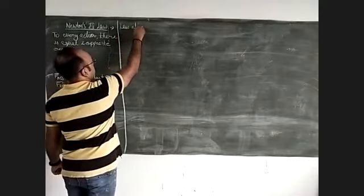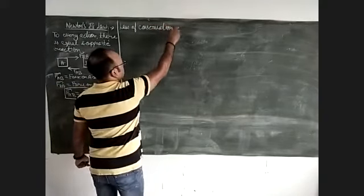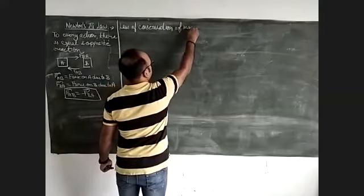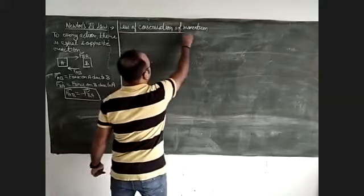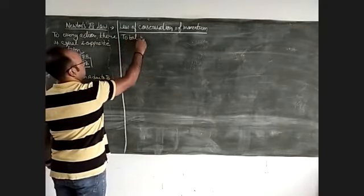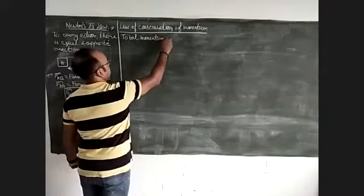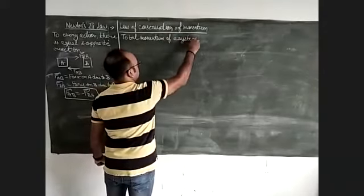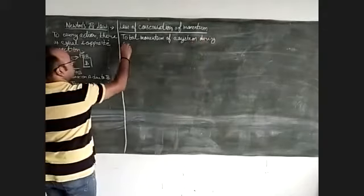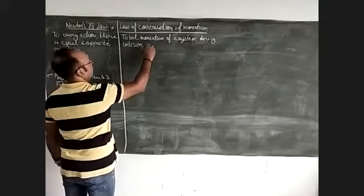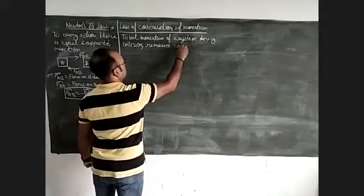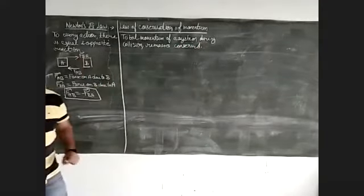Now a very important derivation: the Law of Conservation of Momentum. What does this law say? It says that the total momentum of a system during collision remains conserved. What this means is that initial momentum is equal to final momentum. We are now going to prove this law — how it is possible that initial momentum equals final momentum.